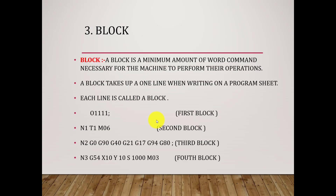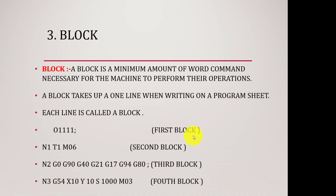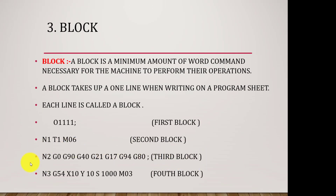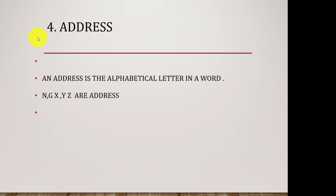Next is block. A block is a minimum amount of word commands necessary for the machine to perform its operations. A block takes up one line when writing on a program sheet — this is the first block, this is the second block, this is the third block. Next is address. Address is the alphabetical letter in a word — N, G, X, Y, Z are addresses.